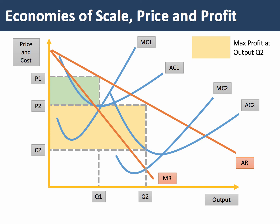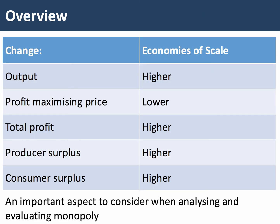This is how we can show economies of scale, price and profit. With economies of scale, output will be higher in the long run — oftentimes way higher for big scale economies. The profit maximising price, other things being the same, will be lower. Total profit will be higher, and producer surplus will be higher.